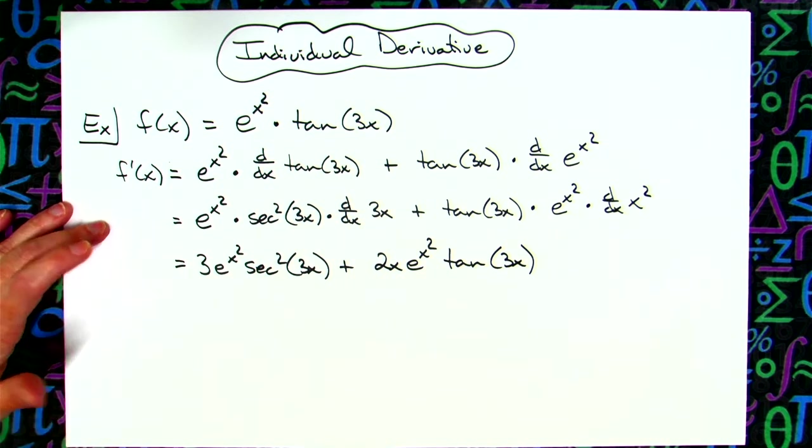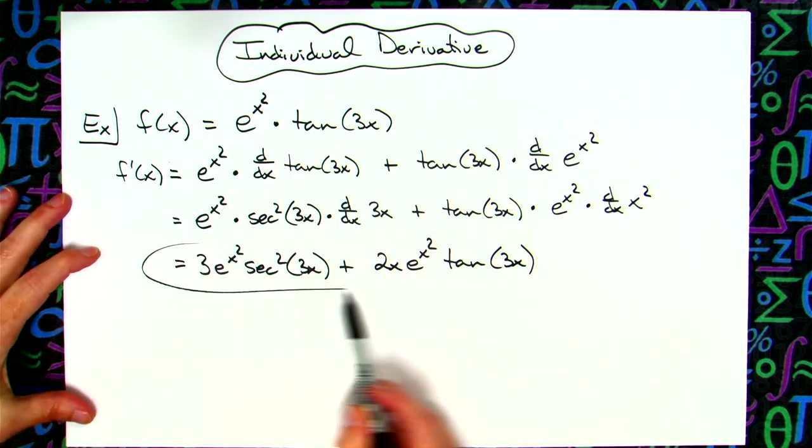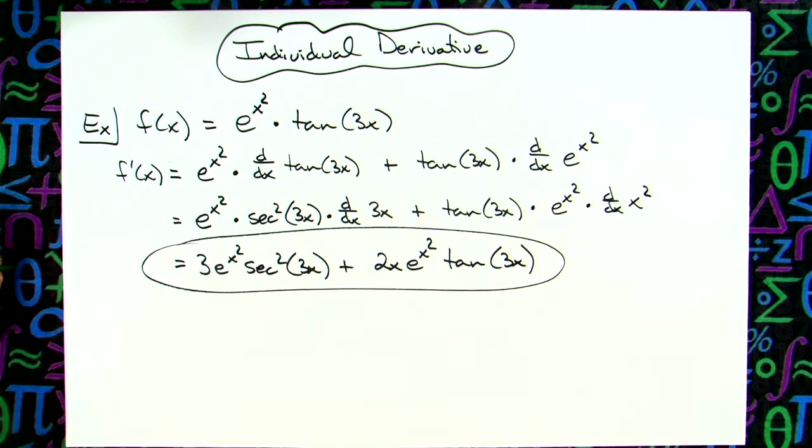You can just leave it like that. If this were going to be a problem where you would need to find those critical points and move on maybe even into curve sketching, you would want to probably factor this to make finding those critical points a little bit easier. But just for a straight derivative, you can leave it just like that.